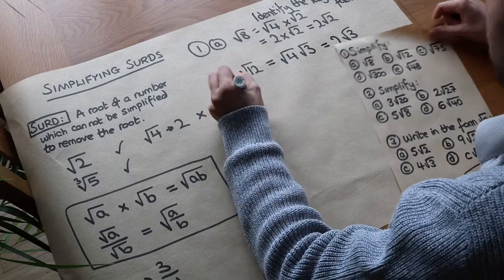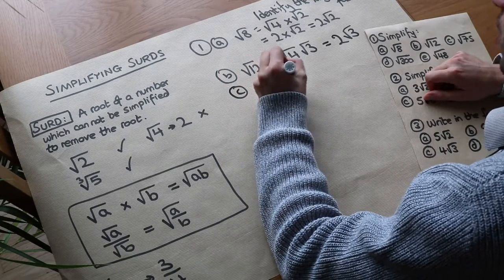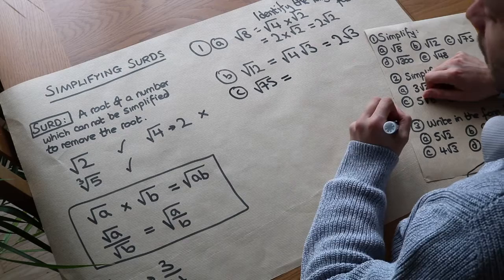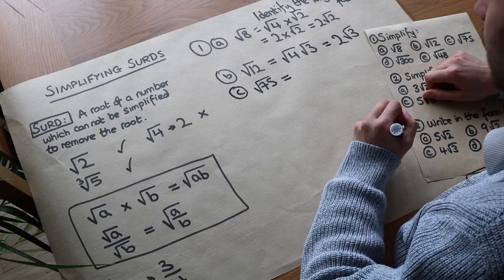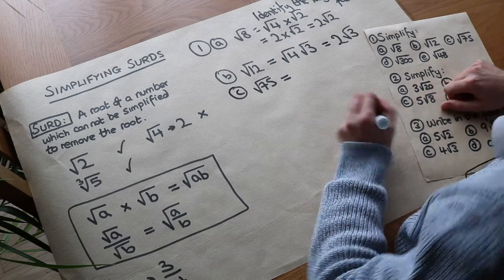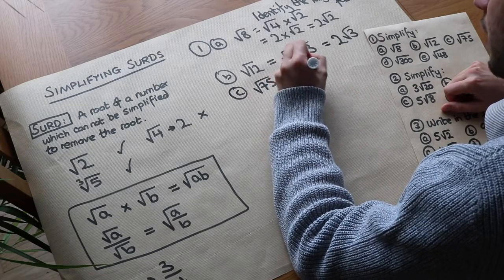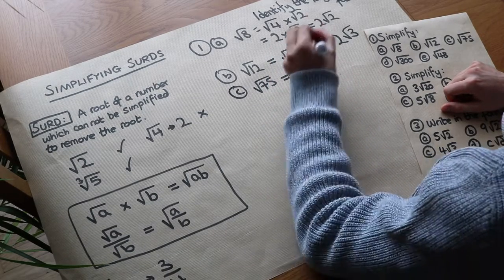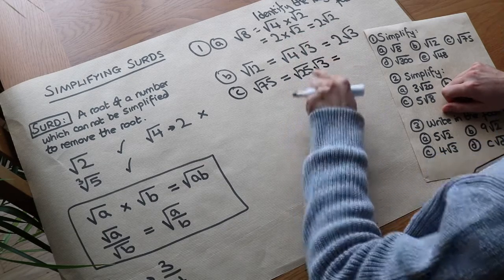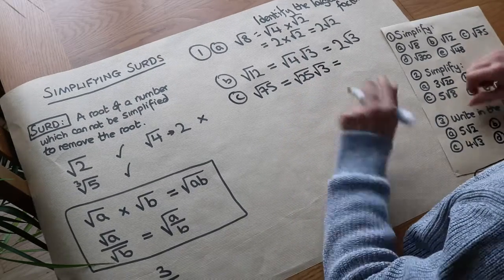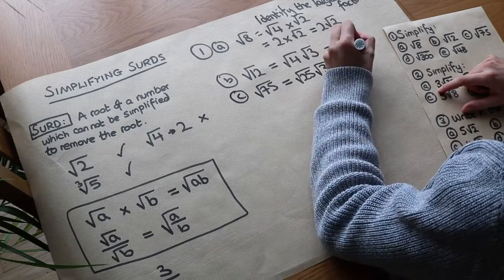What about the square root of 75? What square numbers do we know that go into 75? Well, 25 is a factor which is a square number. So we could write it as root 25 times root 3, since 25 times 3 is 75. The square root of 25 simplifies to 5, so it's 5 root 3.